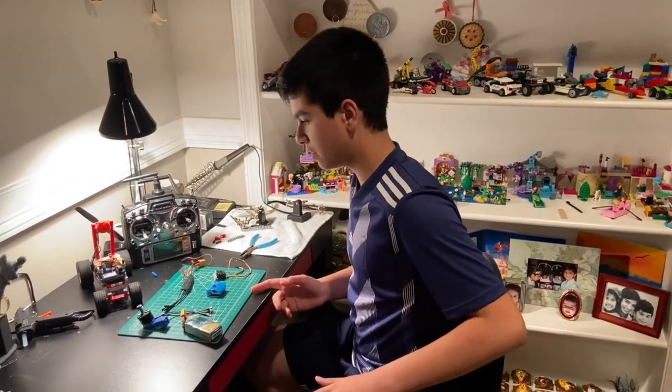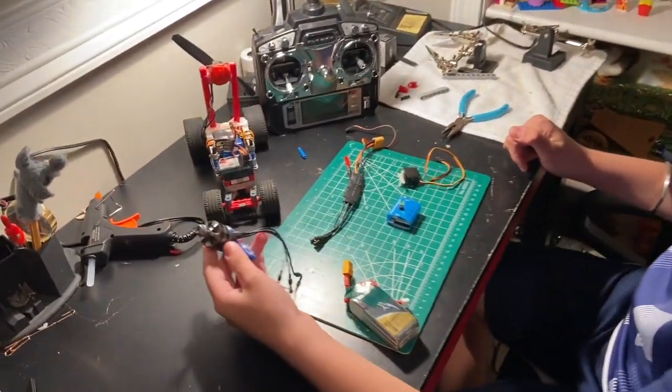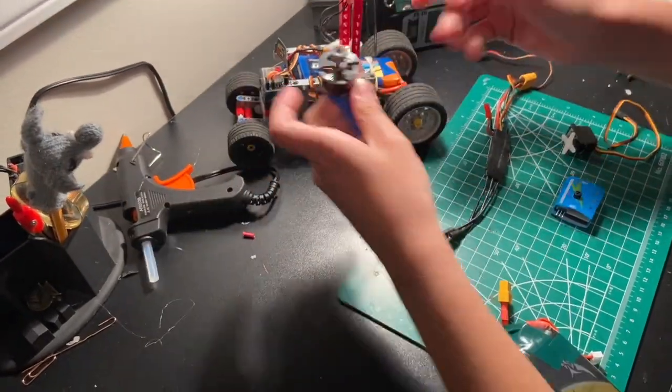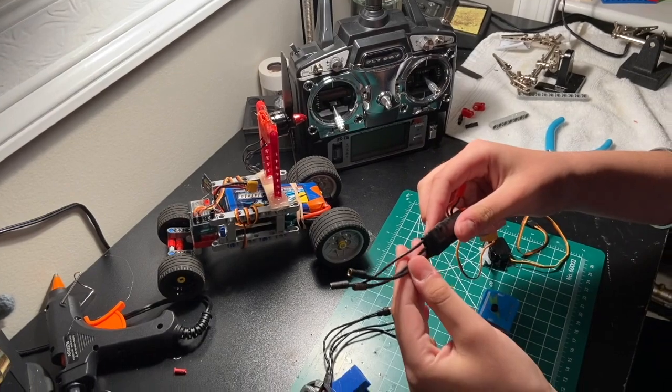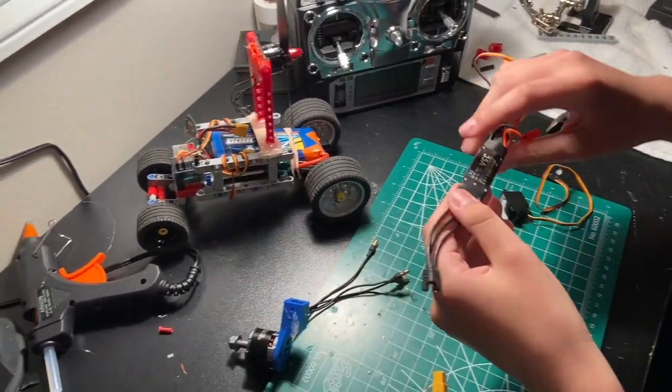Now I'll be showing you the electronics used in the RC car. First we have this brushless motor. I have a different one on the car. The brushless motor is placed right there. I have an ESC, which stands for electronic speed controller. That is underneath the battery.